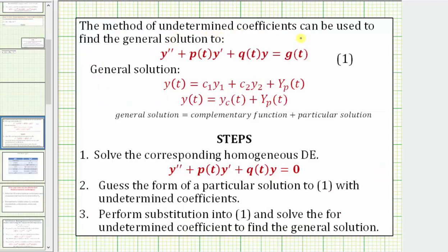The method of undetermined coefficients is used to solve a differential equation in this form here, which is a linear second order non-homogeneous differential equation. The general solution is given by y of t, where y of t equals y sub c of t, the complementary function, which is c sub one times y sub one plus c sub two times y sub two, plus y sub p of t, the particular solution. Even though our question only asks for y sub p of t, we're going to find the general solution. We'll see in this example why it's important to always find the complementary function before determining a particular solution.